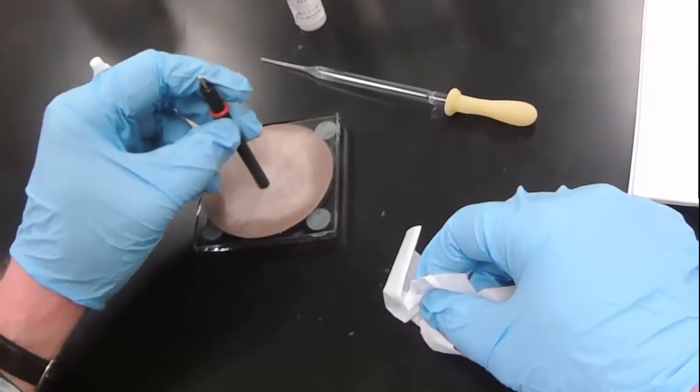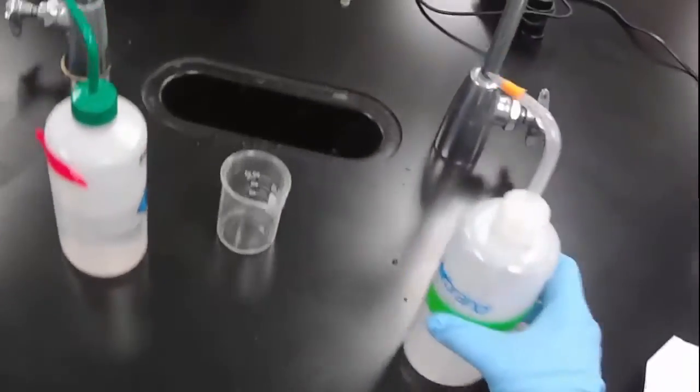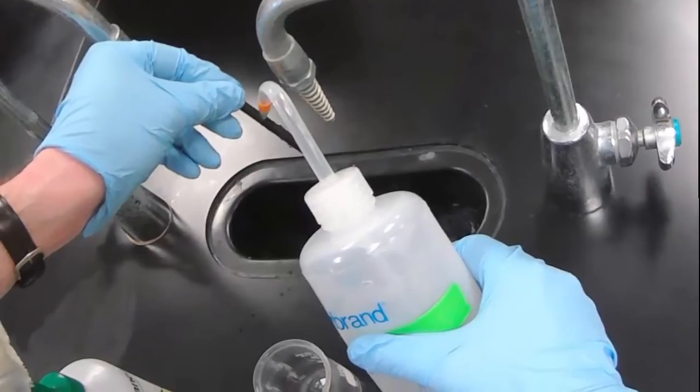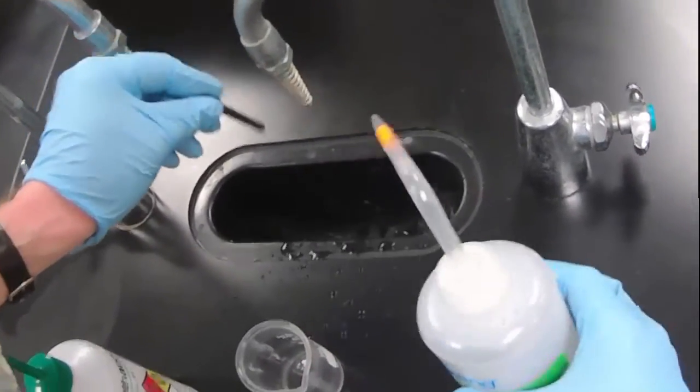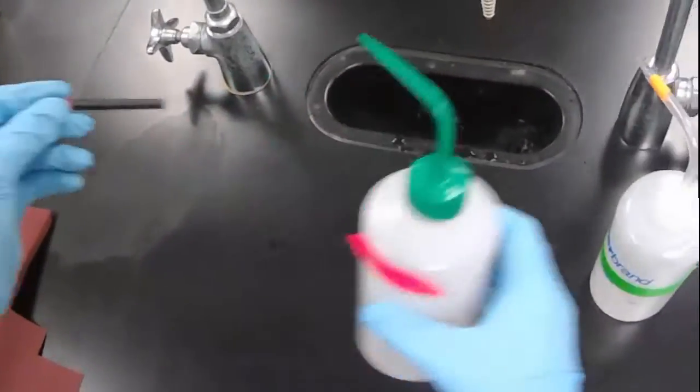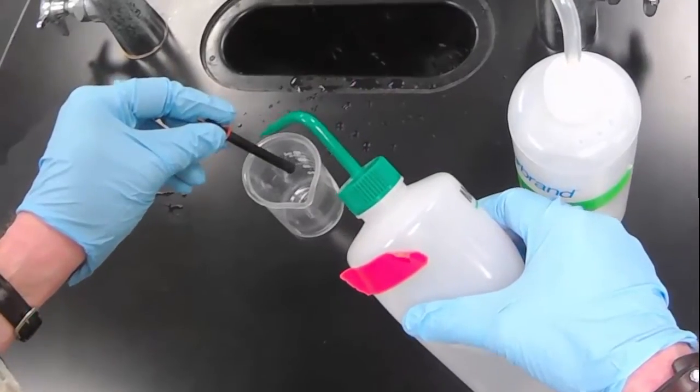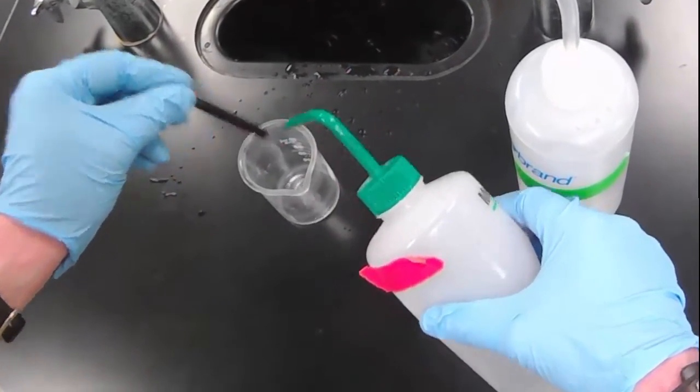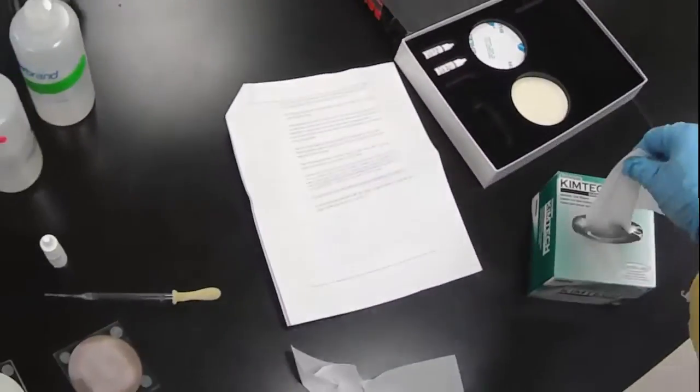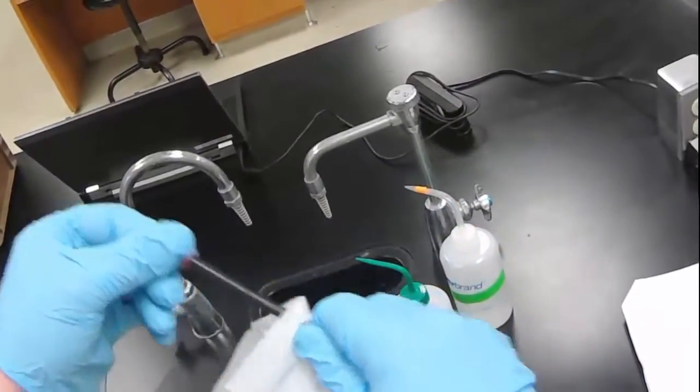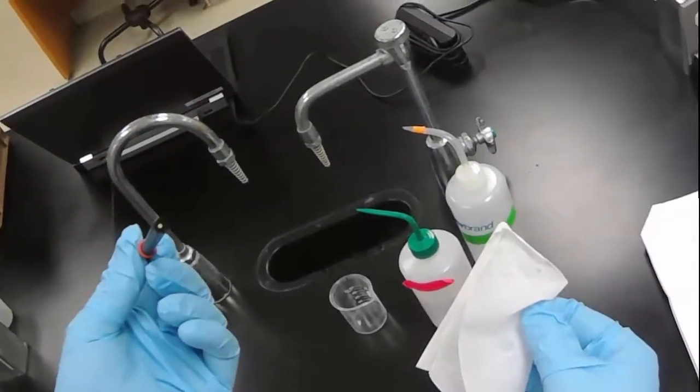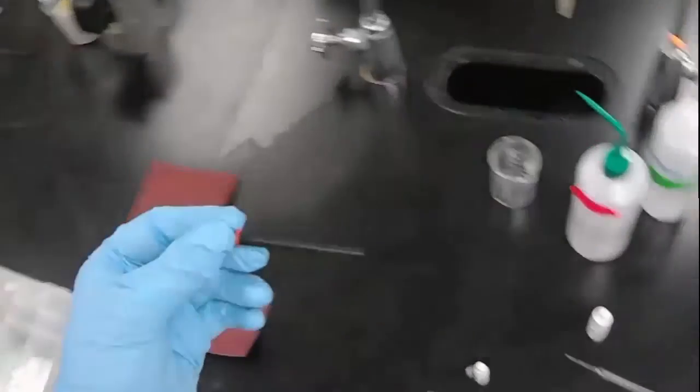Keeping the electrode vertical. Again, rinse with water to get all the alumina grit off. And then finally rinse with methanol. Dry with a kimwipe. And we're ready to use this electrode.